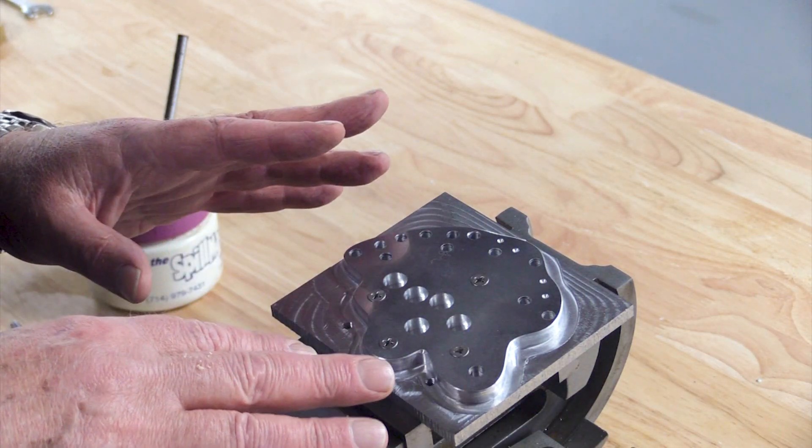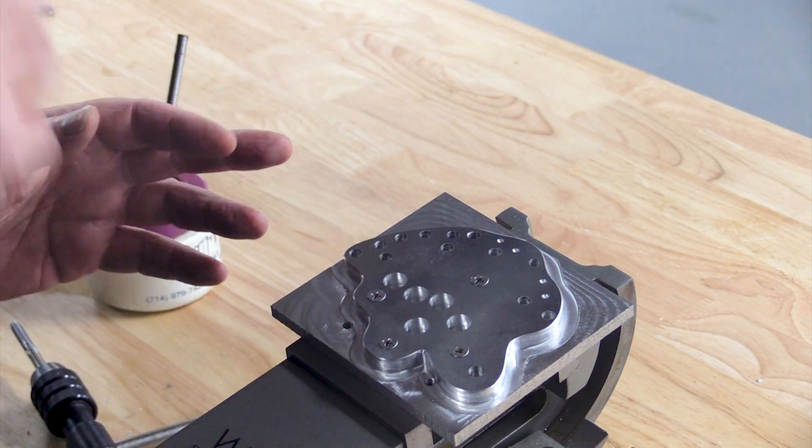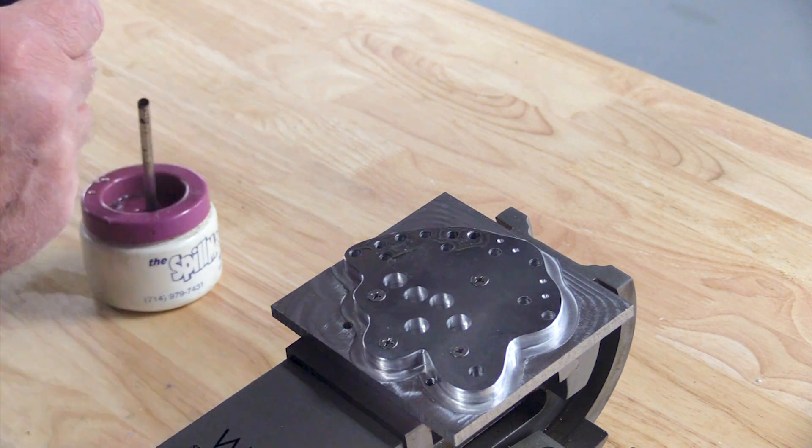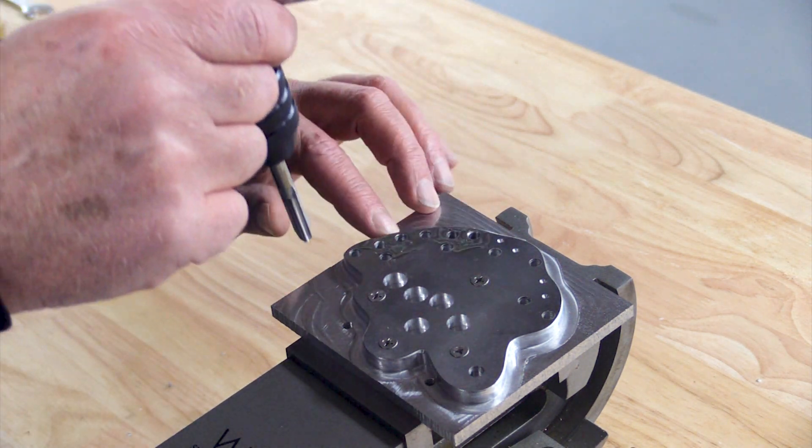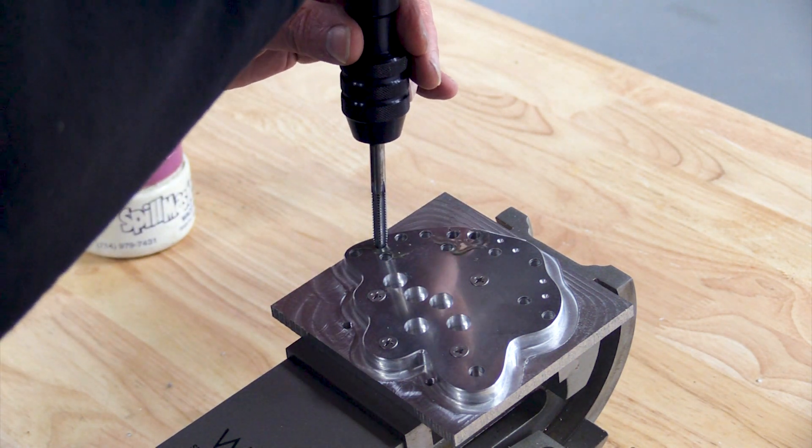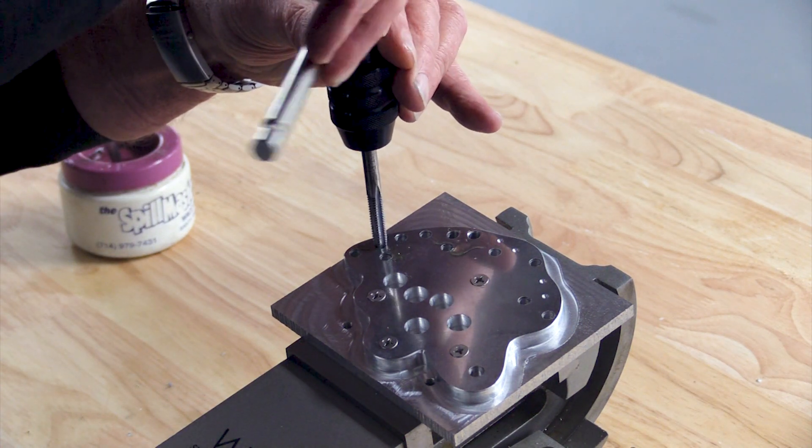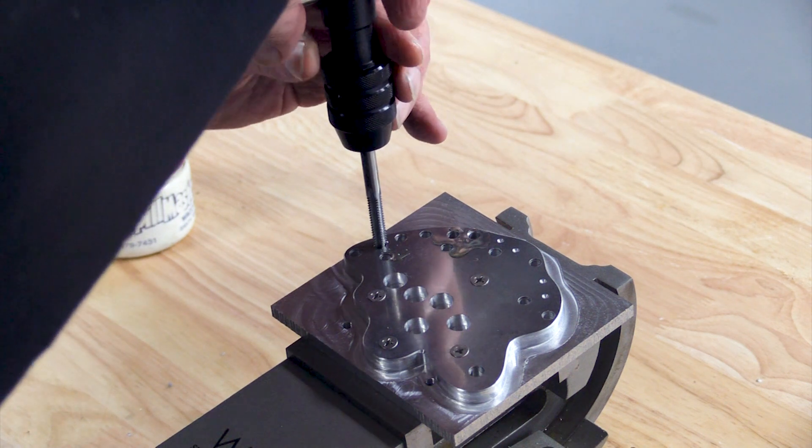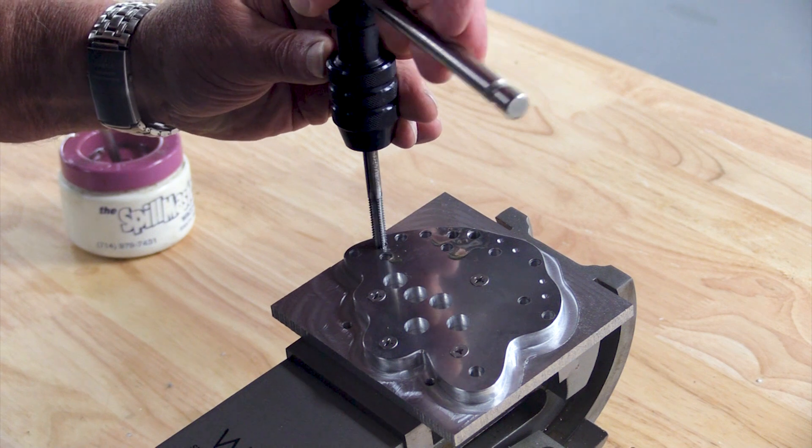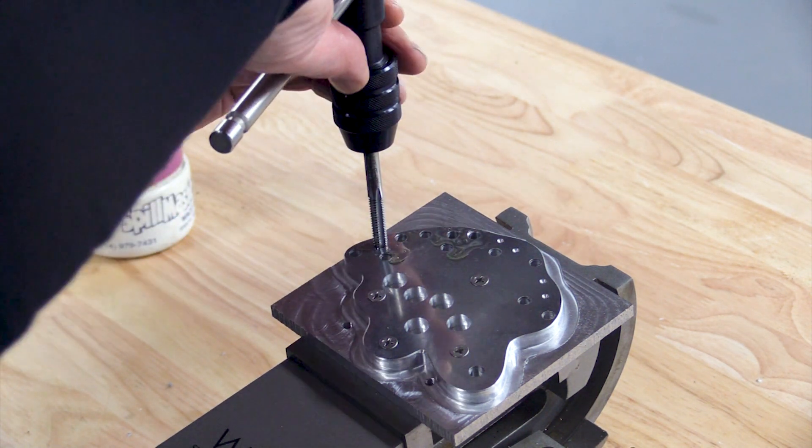Now that I've got all the holes drilled, I've got the vise still tilted in that same direction, and now I'm going to hand tap those holes. All I have to do is keep the tap vertical just the same way as the drill entered. It's a little tricky when you first enter the hole because it's at an angle. But once it gets started, it's easy to see that I'm perfectly vertical, and now it's just a matter of tapping it.